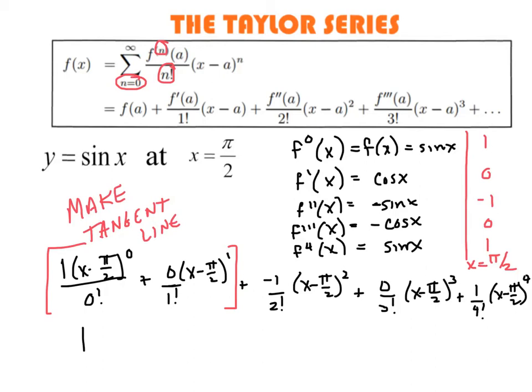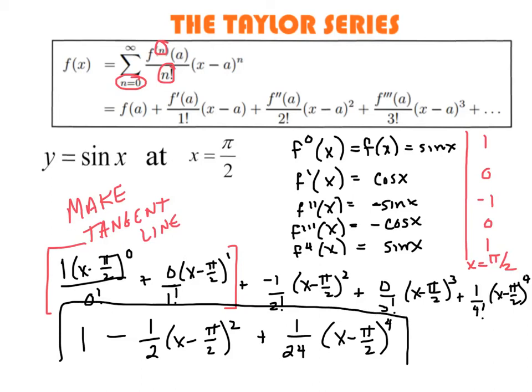So next, we've got negative 1 over 2 factorial. That's just negative 1 half. And then x minus π over 2 squared. The next term would be 0 because 0 over 3 factorial is 0. Then we've got 1 over 4 factorial. So 4 factorial is 24. So here is my the first three terms of this Taylor series of sine around π over 2.